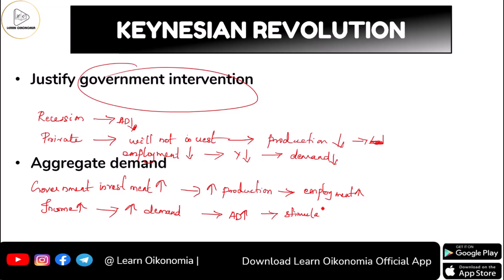This is considered a kind of stimulation of the economy. Keynes always considered fiscal stimulus as something very important. He said the government should first reduce tax and increase spending or expenditure — this is what Keynes suggested.